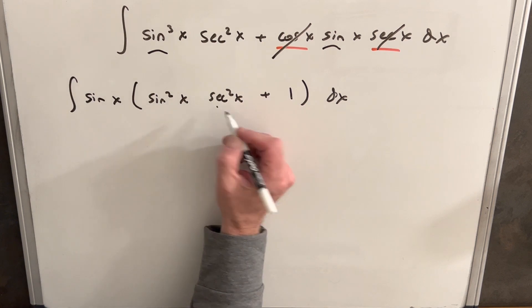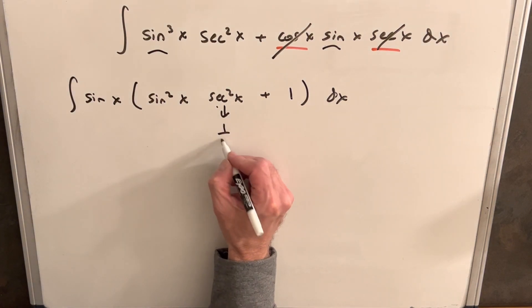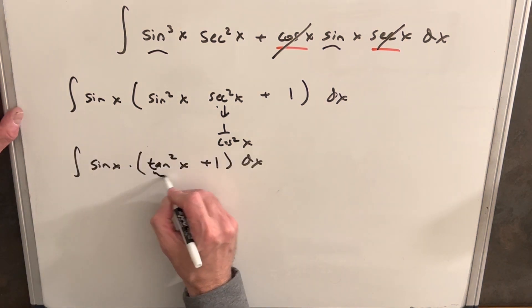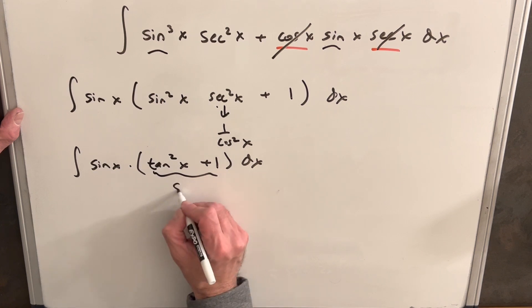And then I notice if I just change this secant squared, if we write this as 1 over cosine squared x, we're going to have sine squared over cosine squared, and that's just going to be tan squared. But then we have this nice identity, tan squared x plus 1 is actually just secant squared x.